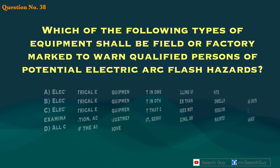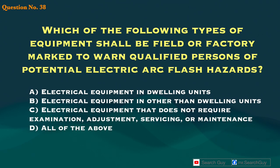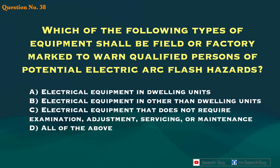Question 38. Which of the following types of equipment shall be field or factory marked to warn qualified persons of potential electric arc flash hazards? A. Electrical equipment in dwelling units. B. Electrical equipment in other than dwelling units. C. Electrical equipment that does not require examination, adjustment, servicing, or maintenance. D. All of the above.